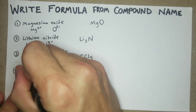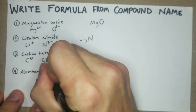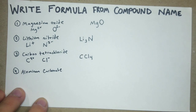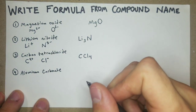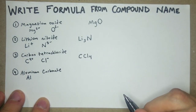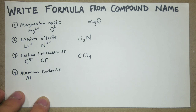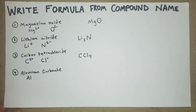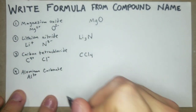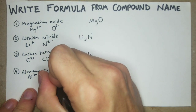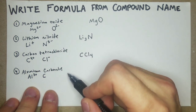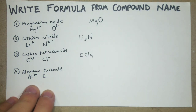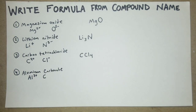Now, aluminum carbonate. Same approach: start with the first element, Al, and find the charge. Aluminum is 3+. Then 'carbonate' — it's not just carbon, it's not 'carbide.' It's a polyatomic ion, so we'll consult our chart or recall it from memory.